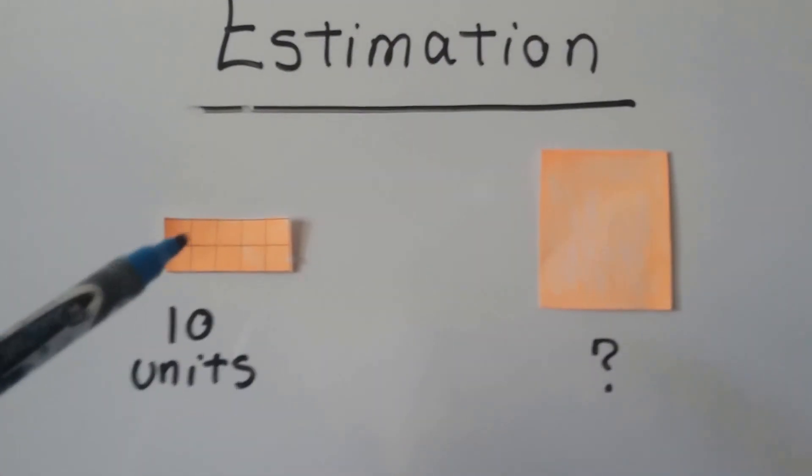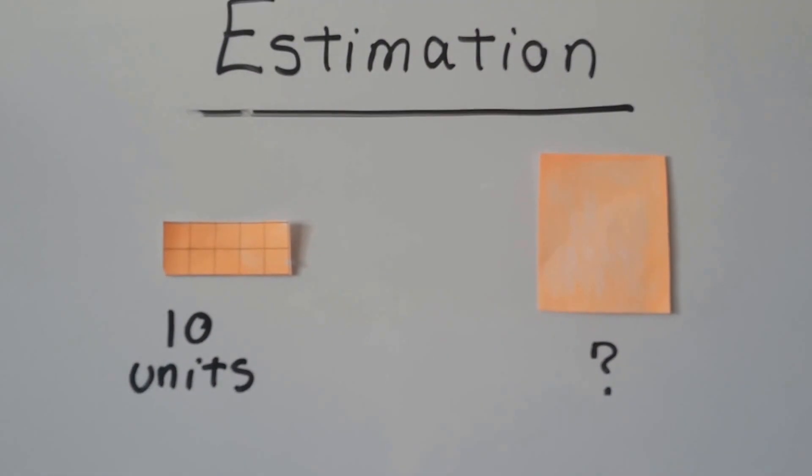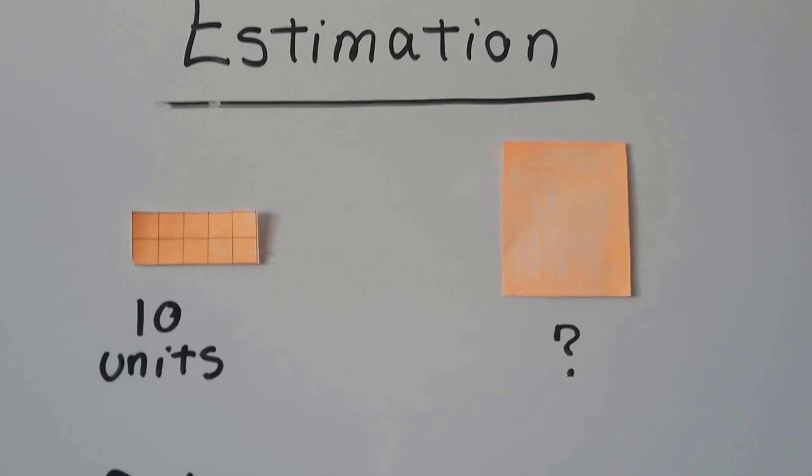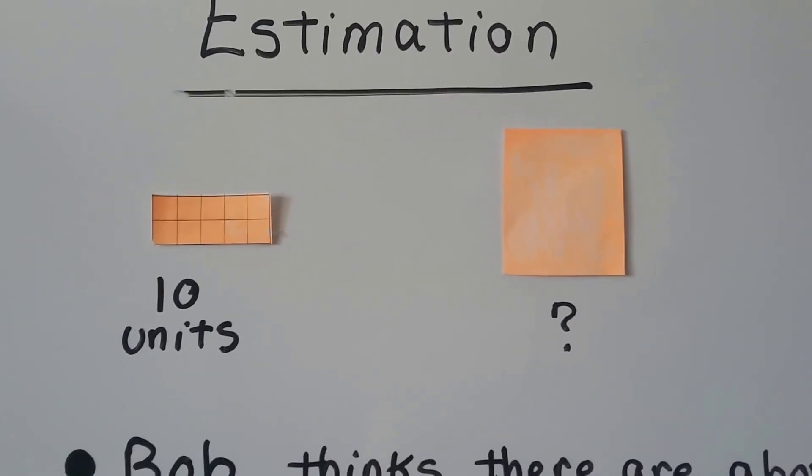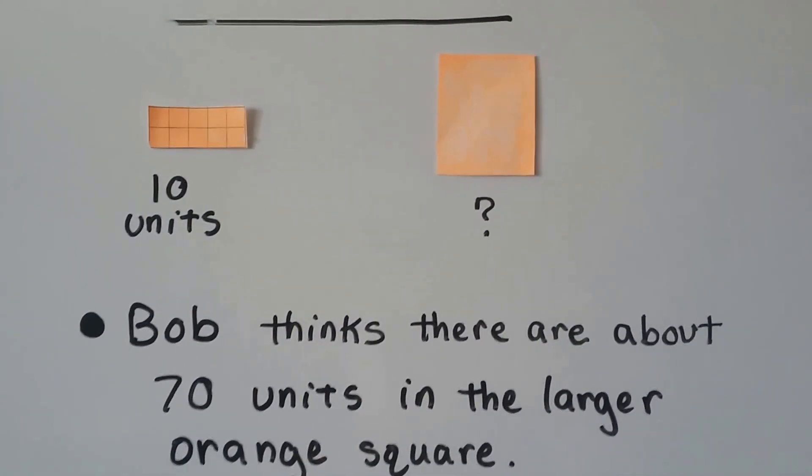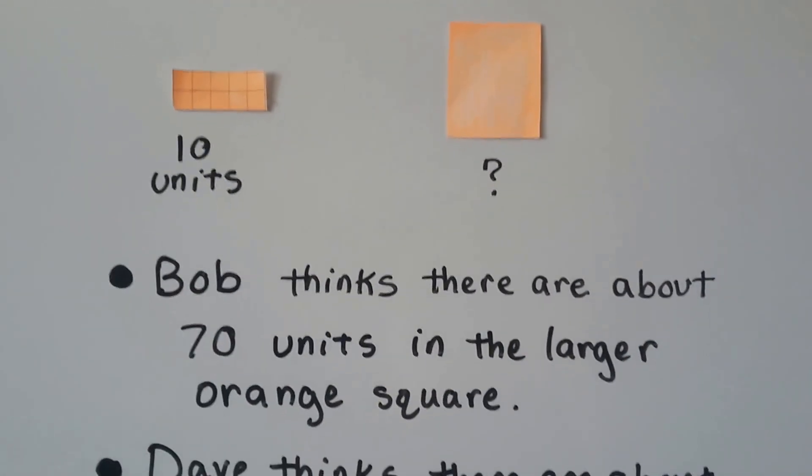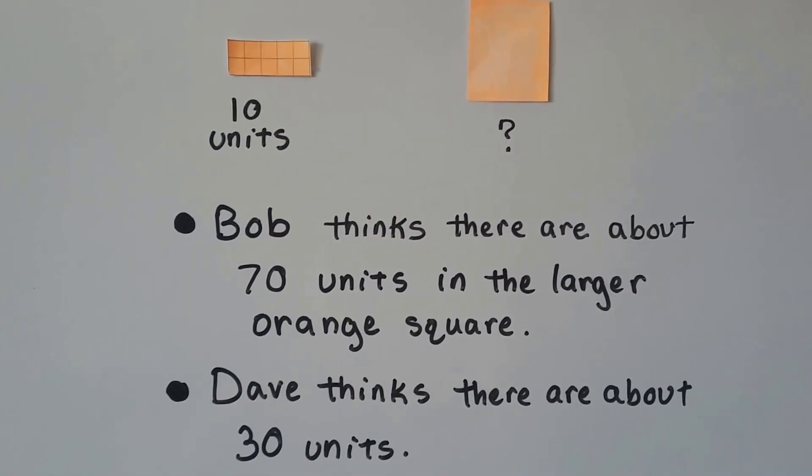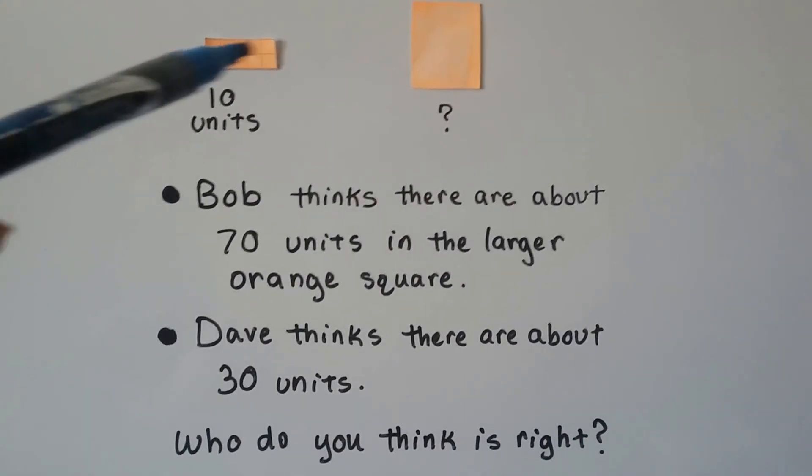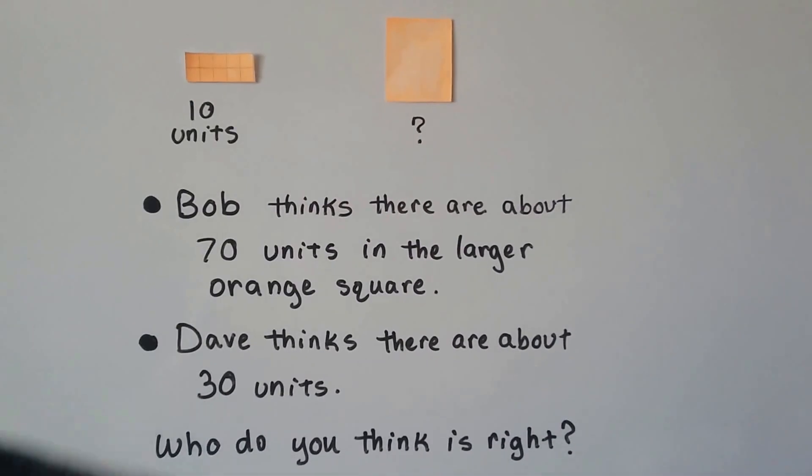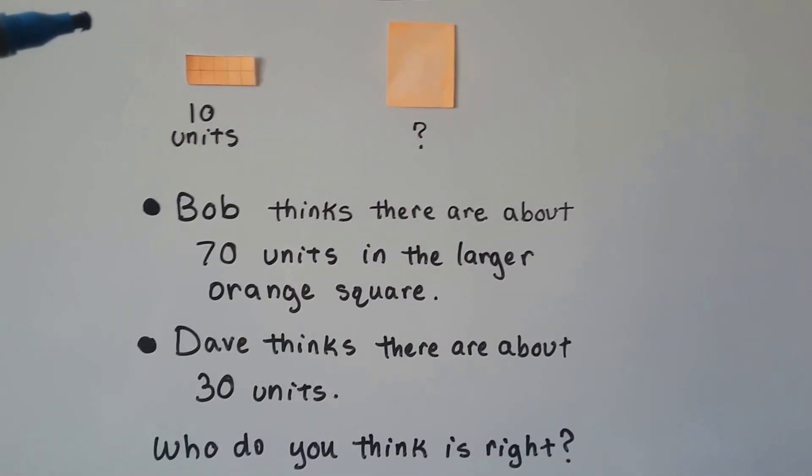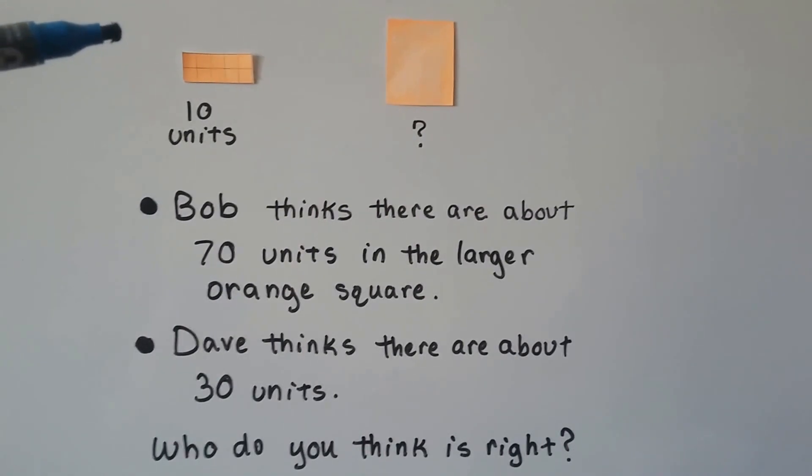Look at this little box right here, this rectangle. This is 10 units. There's 10 units in here. Now this one is blank. What do you think? Well, Bob thinks there's about 70 units in the larger orange square. Dave thinks there's about 30 units. Who do you think is right? If that's 10, how many do you think are in here? Can you look at them and make an estimate, make an educated guess how many you think are in here?